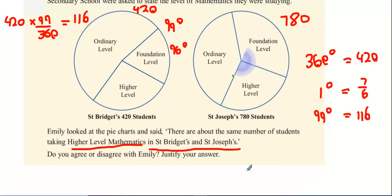However, let's do it this way. Let's get 780 people and let's multiply it by 96 degrees out of 360. There's 208 students in St. Joseph's doing higher level maths while there's 116 of them in St. Bridget's. Can I say that there are the same number of students in each school doing it? Pie charts are weak in one regard. They only tell you the fraction and the percentage. They don't give you the overall amounts. It's a weakness of pie charts.